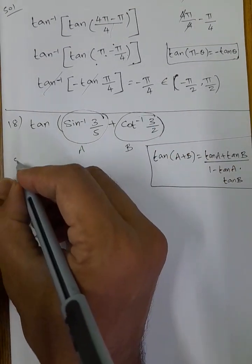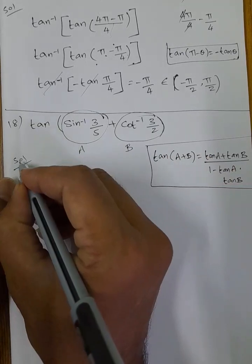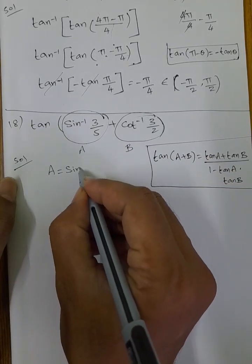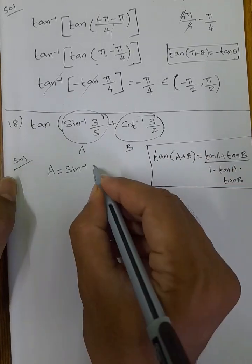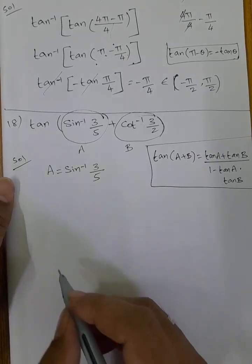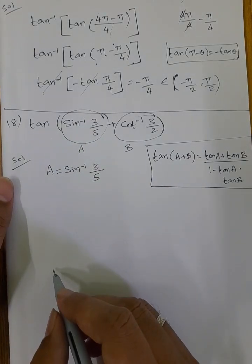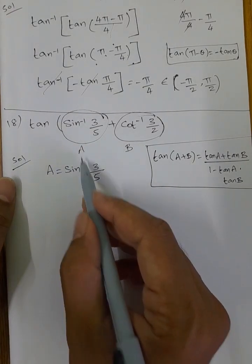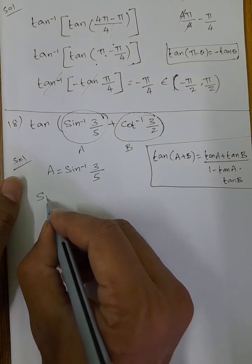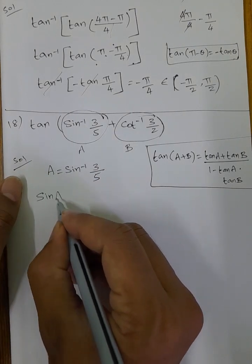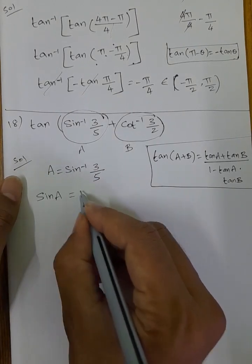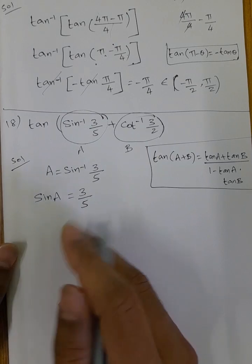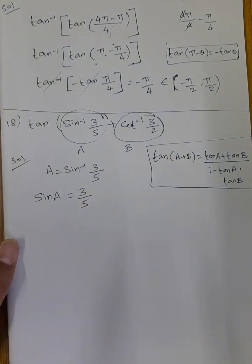Let A = sin inverse of (3/5). So sin A = 3/5. We need to find tan A to substitute in the formula.